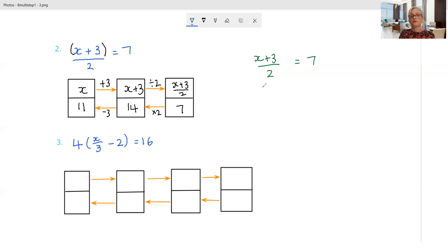So my first step is undoing the division by 2 by multiplying by 2. x plus 3 is 14. Then my next step is to get rid of this adding 3 by subtracting 3. And of course, we get the same answer that we got doing it this way.